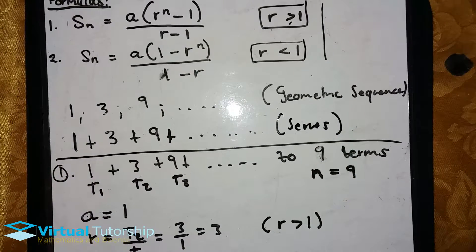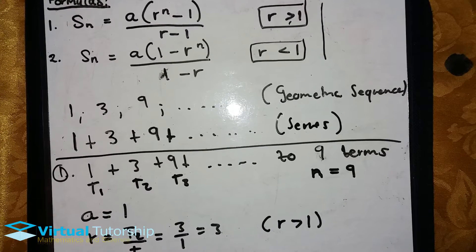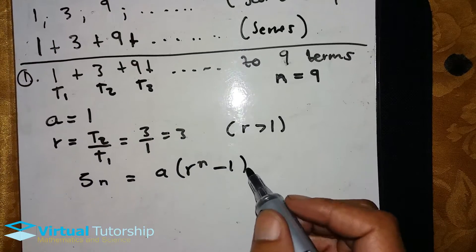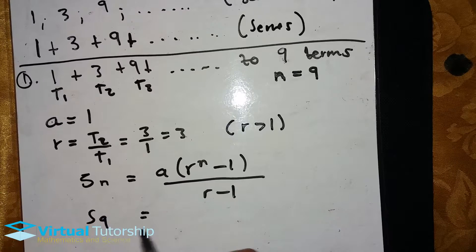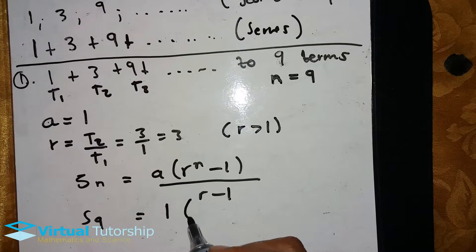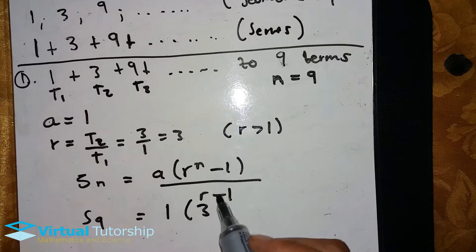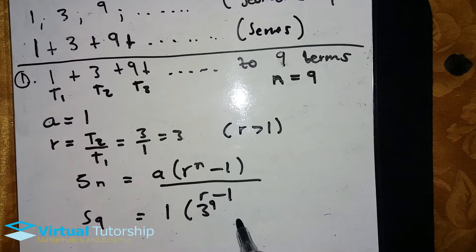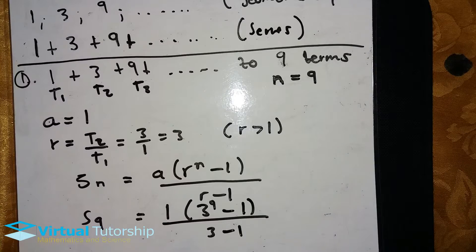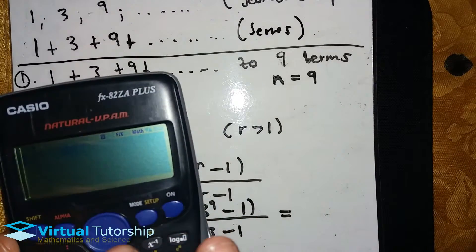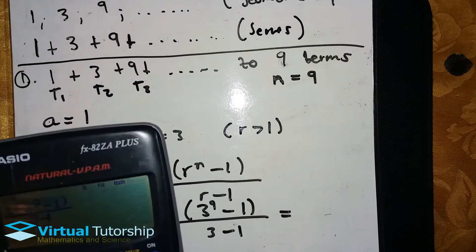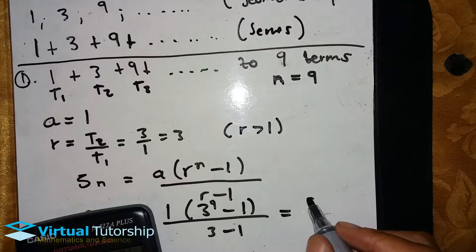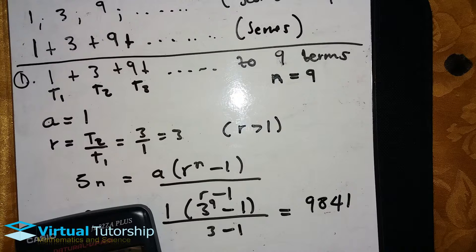So we want the sum of the first nine terms. Since r is greater than 1, we use the first formula. So a is equal to 1, r is equal to 3, and n is equal to 9. Substituting: it's 1 times 3 to the exponent 9 minus 1, all divided by 3 minus 1. Calculating: 1 times 3 to the 9, minus 1, divided by 2. The answer is 19,841.